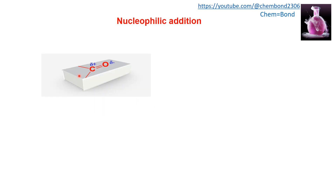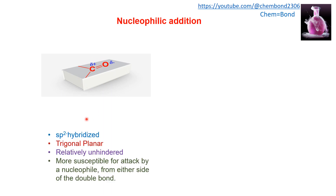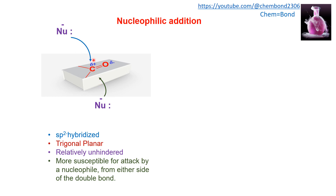For nucleophilic addition, the carbonyl group is sp2 hybridized and trigonal planar — carbon, oxygen, and both attached alkyl or hydrogen groups are in the same plane. It is relatively unhindered, making it more susceptible to attack by a nucleophile from either side of the double bond — from above or below.